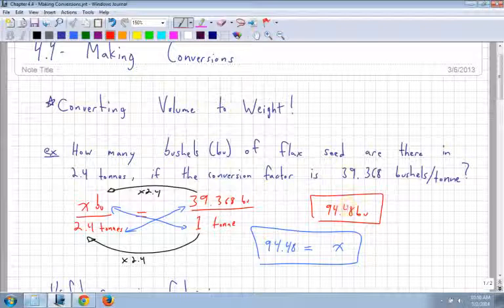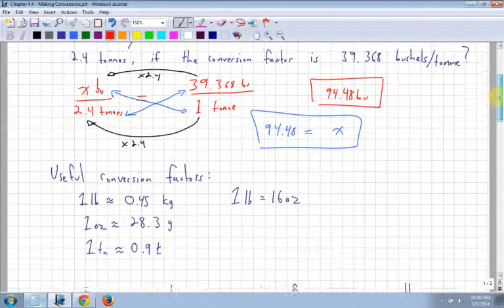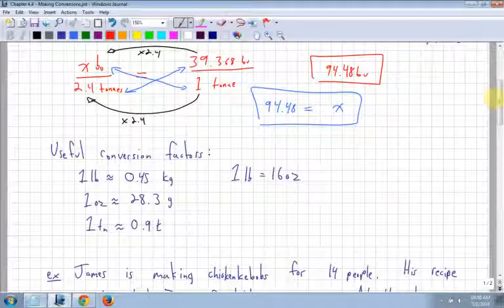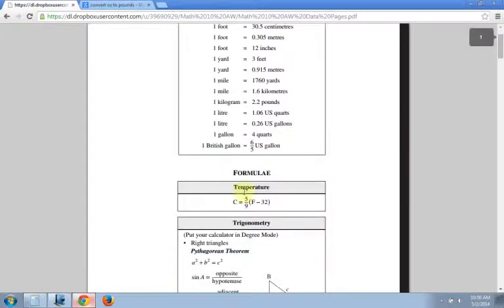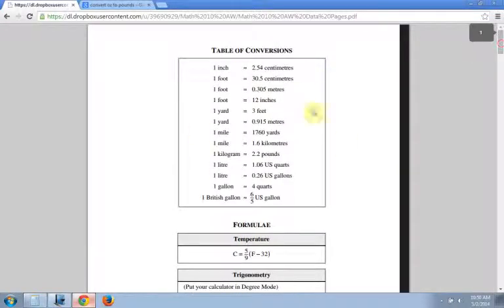So hopefully that makes sense. If it doesn't, go back and watch through the example. There's some conversion factors that are not shown on your data pages. These are your data pages that you should be printing off and using for the whole course. They do have a table of conversions. It is not comprehensive, which means it does not have everything on it. There are also useful formulas, like for temperature and for Pythagorean theorem. But for this section, we just basically use the table of conversions.